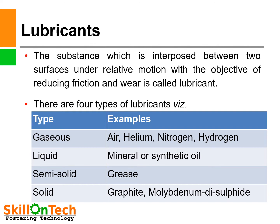There are four types of lubricants: gaseous (e.g., air, helium, nitrogen, hydrogen), liquid (mineral or synthetic oils), semi-solid (grease), and solid (graphite, molybdenum disulfide).